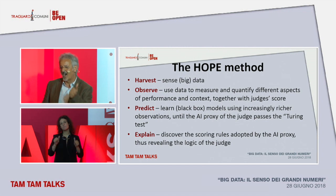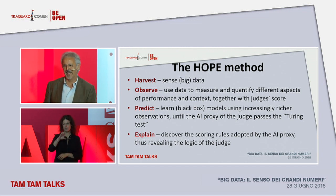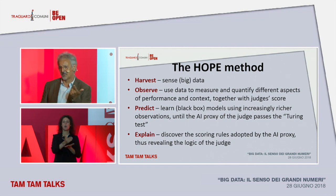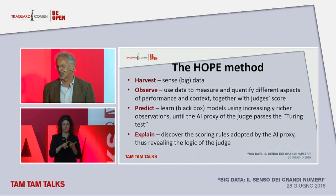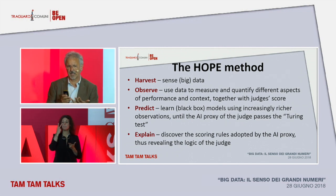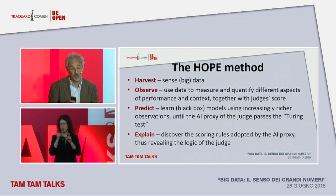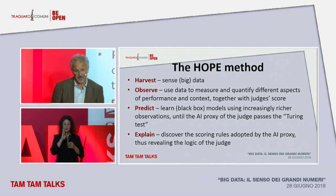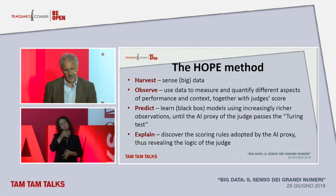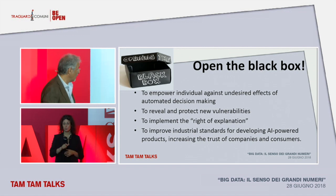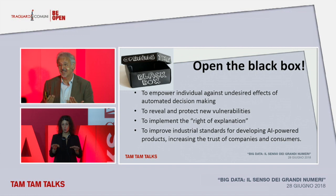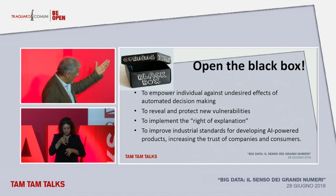We can focus on the HOPE method — HOPE stands for Harvest, Observe, Predict, and Explain. Harvest loads of data, observe them well, create many features on performance and on the context within which this happens. We can try to predict — create an artificial judge that can't be distinguished from a human judge — and then explain the logic followed by a human judge.